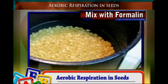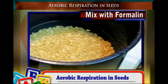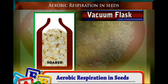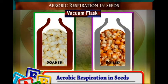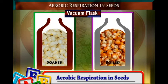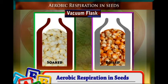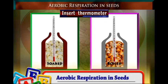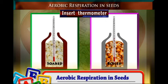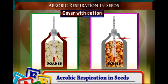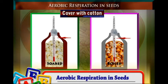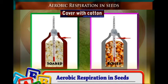Once you have your soaked maize and your boiled and treated maize, get vacuum flasks. Open the lid and pour the soaked maize into one flask and the boiled maize into another. Fill the flasks with the maize, insert a thermometer, and cover the mouth of the flasks with cotton wool.